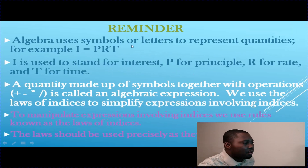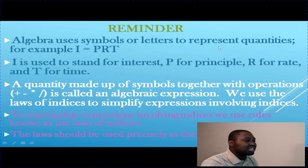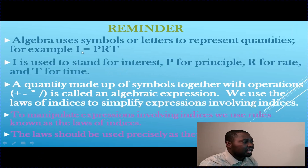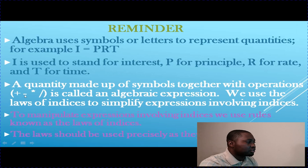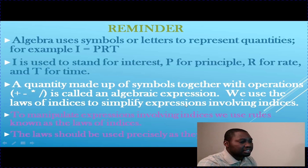Let's take a look at the following reminder before we go further. Remember, algebra uses symbols or letters to represent unknown quantities, as we discussed in the previous video. For example, i equals p·r·t, where i stands for interest, p for principal, r for rate, and t for time. A quantity made up of symbols together with operations of addition, subtraction, multiplication, and division is called an algebraic expression.